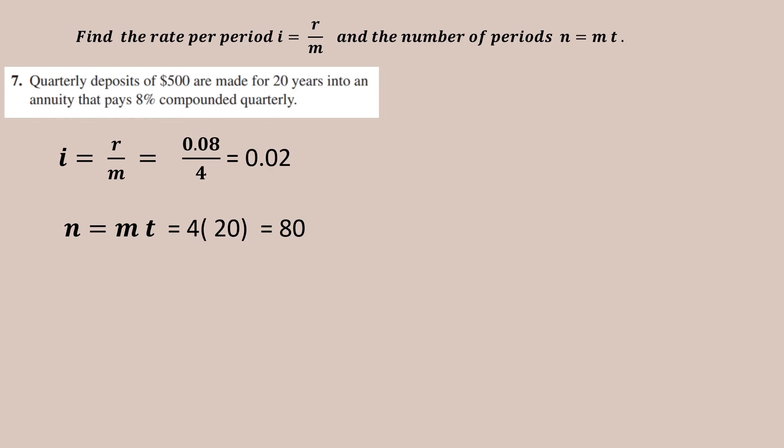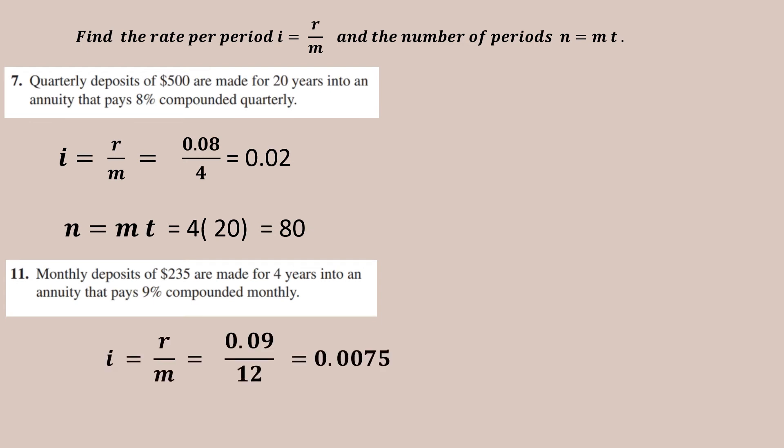If the monthly deposit of $235 is made for 4 years with 9% interest compounded monthly, then my i will be r/m, which is 0.09 paid monthly, so m is 12, and you get the value of i is 0.0075, and n will be 48.